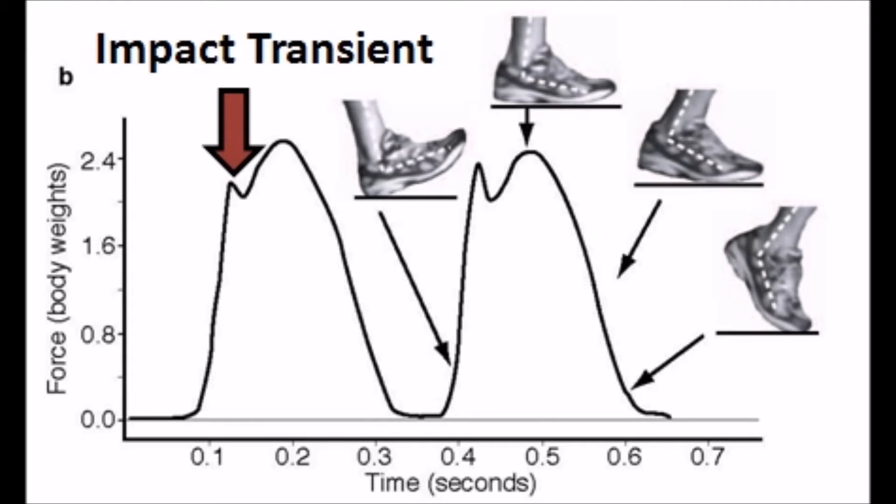Always remember that both heel strike running and forefoot strike running generate a ground reaction force because the force of the body weight is always interacting with the ground. But what I really want you to pay particular attention to on this graph is the little sharp peak on the left labeled the impact transient.